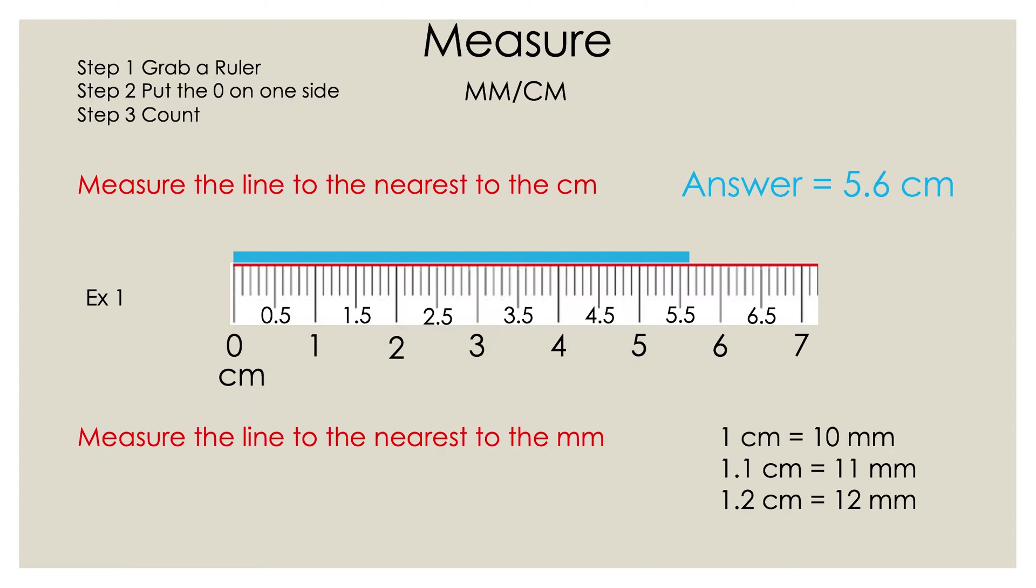Now let's go ahead and take a look at changing that to millimeters. So as you can see on the bottom right, you have 1 centimeter is equal to 10 millimeters. 1.1 centimeters is equal to 11 millimeters. 1.2 centimeters is equal to 12 millimeters.